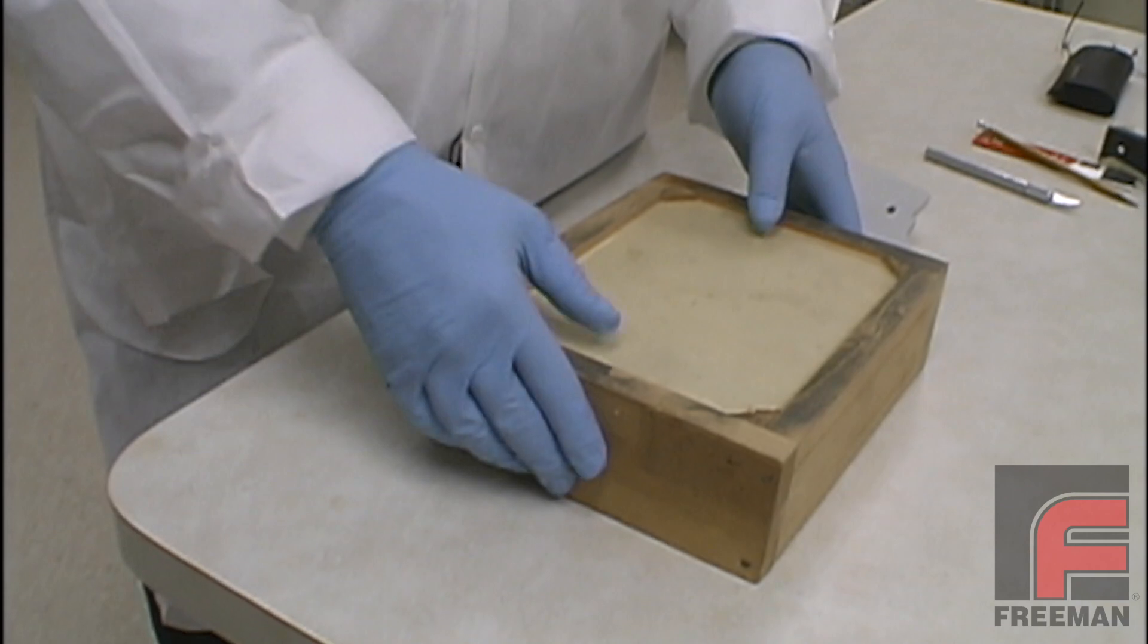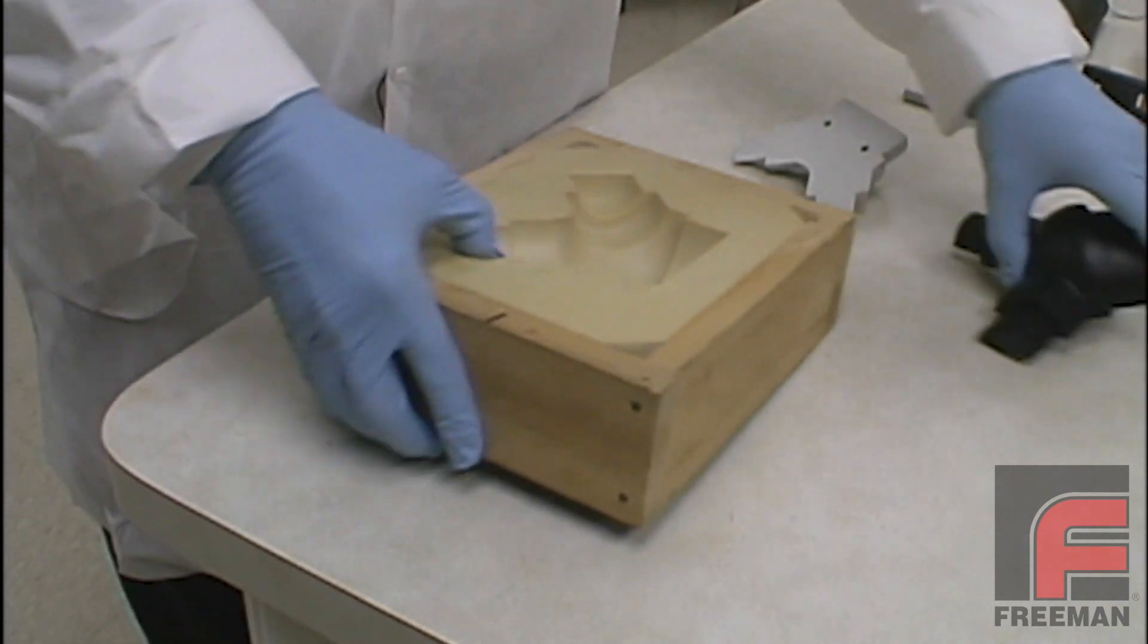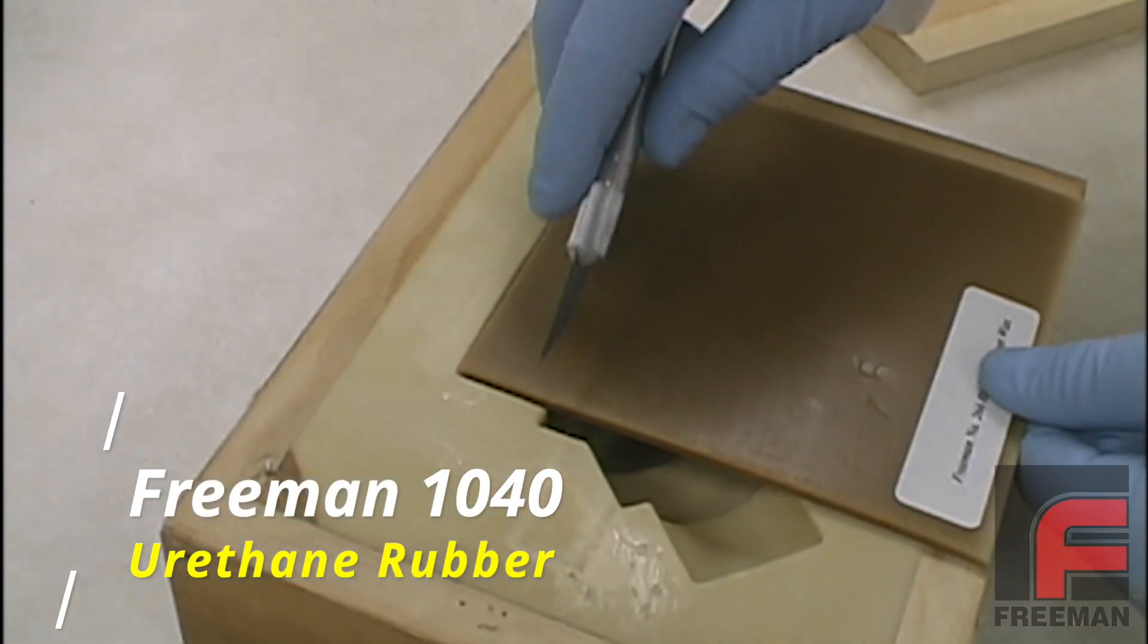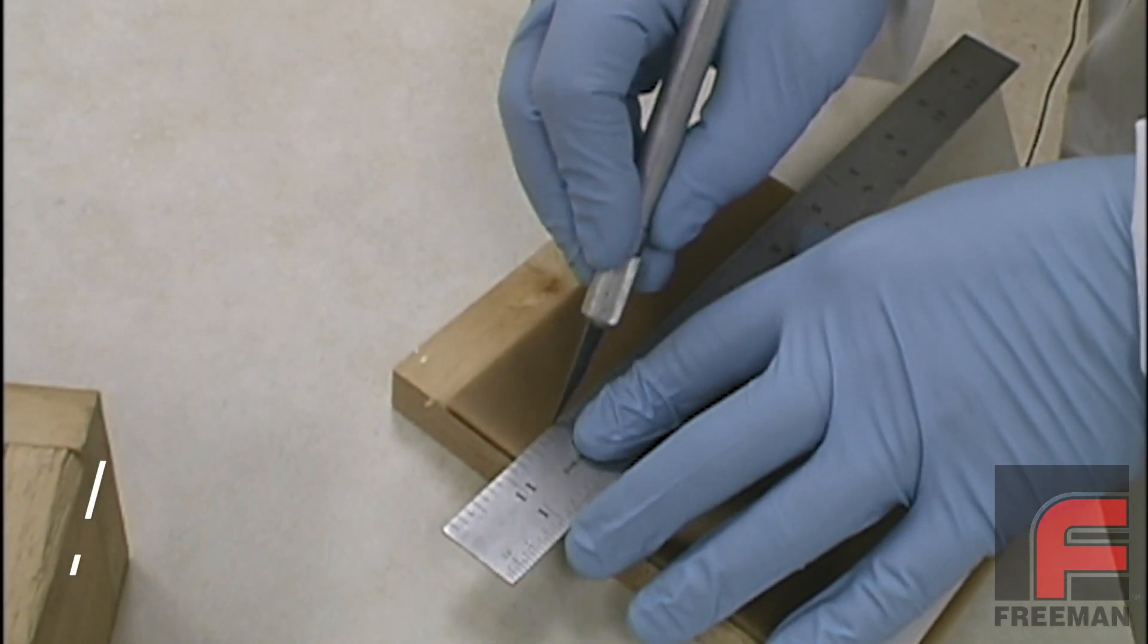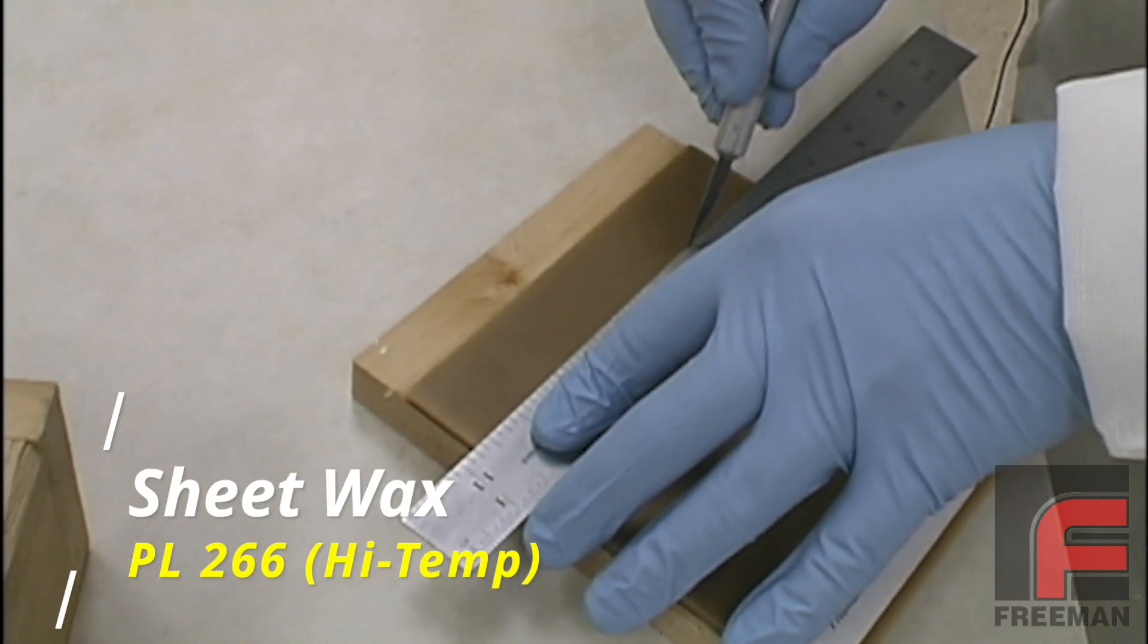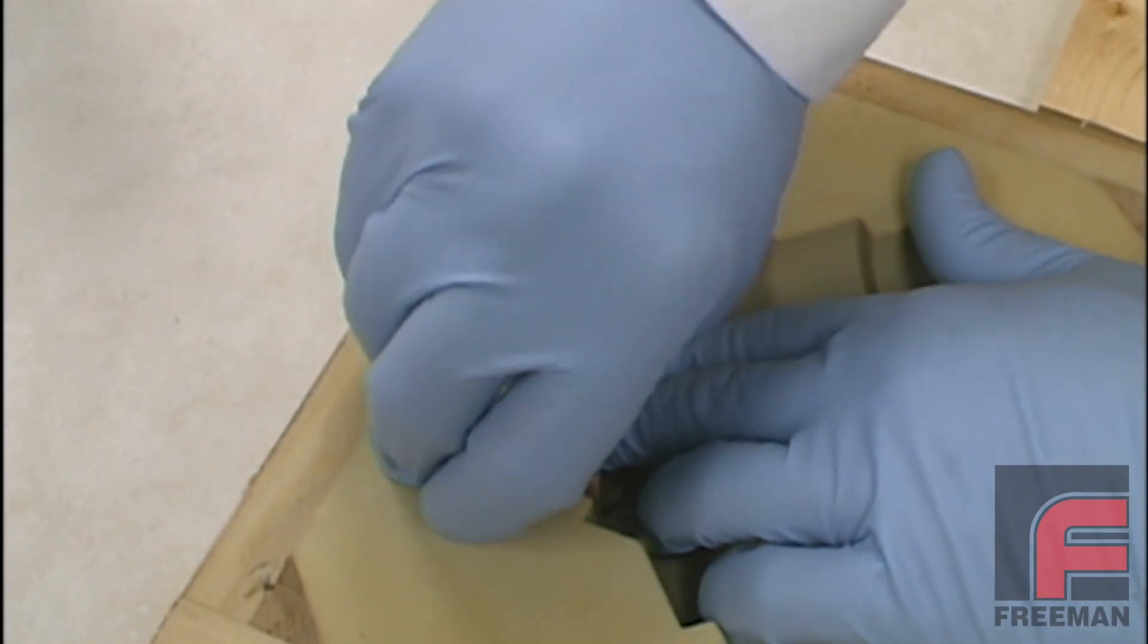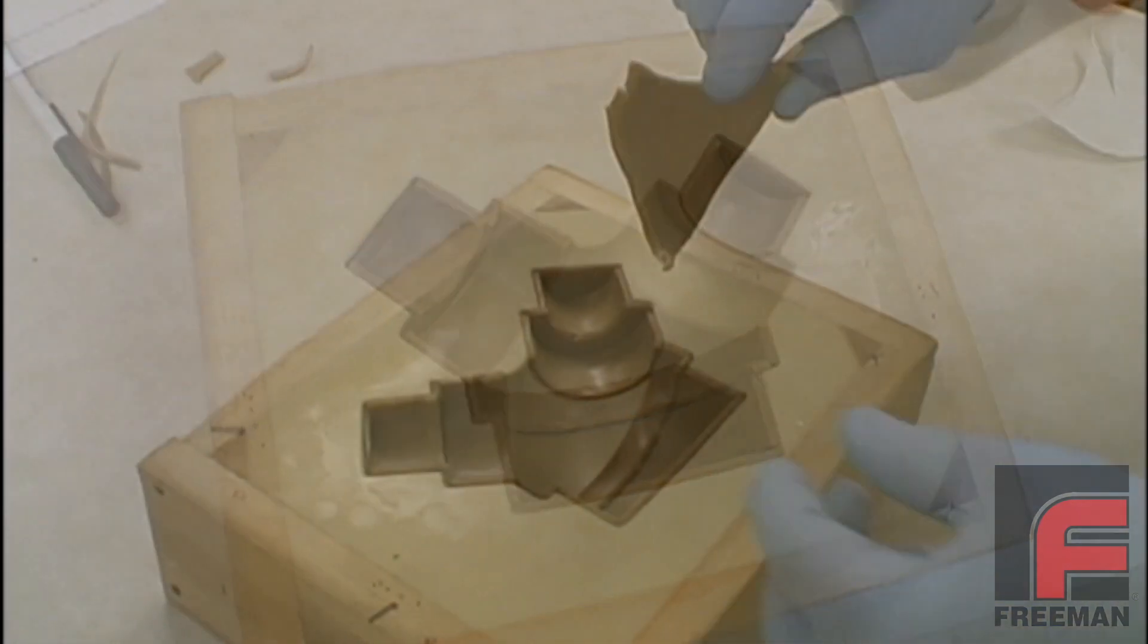We start with our mold which has already been mass cast from our original part shown here. The mold is made of our Freeman 1040 flexible urethane. In the cavity, we lay up our 1⁄8 inch thick, high-temperature, adhesive-backed Freeman sheet wax. By cutting and fitting the pieces, we form a uniform 1⁄8 inch layer over the entire mold surface.